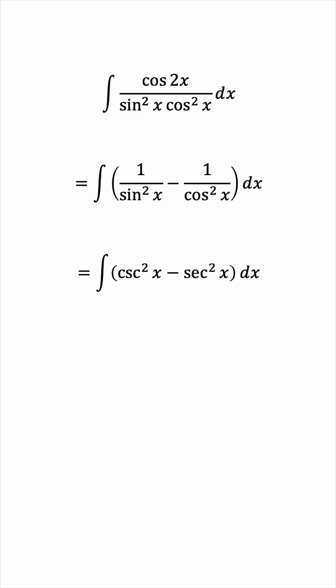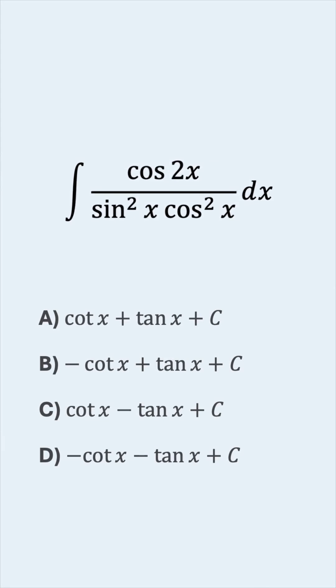The antiderivative of cosecant squared is negative cotangent, and the antiderivative of secant squared is positive tangent. So the result becomes negative cotan x minus tan x plus a constant of integration c. So the correct option is d.